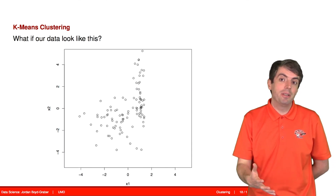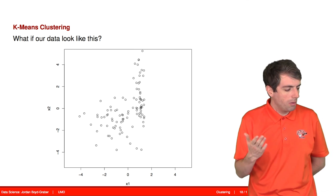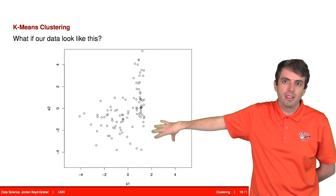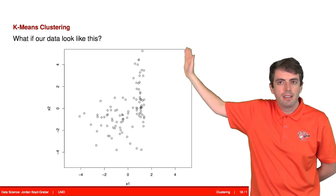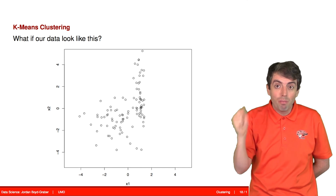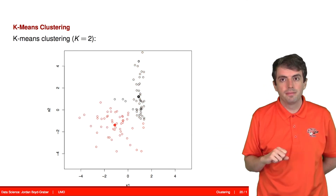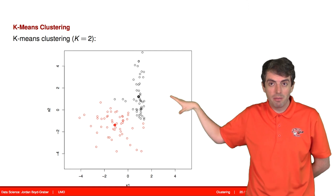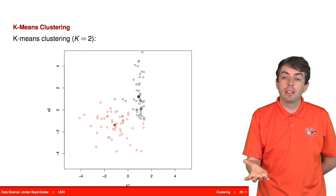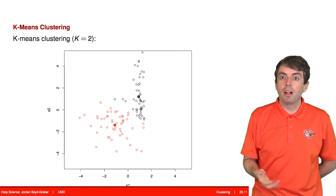K-means has a lot of issues. One issue is that it can't handle certain data shapes. For example, if you have a circular cluster at the bottom and a sausage-shaped cluster going up, k-means would incorrectly cut off the bottom of the sausage and assign it to the circular cluster rather than capturing the two distinct clusters sensibly. To handle oddly shaped clusters like these, we'll talk next about Gaussian mixture models.